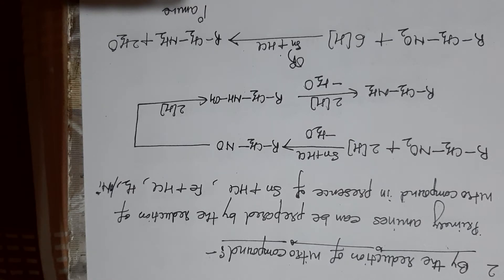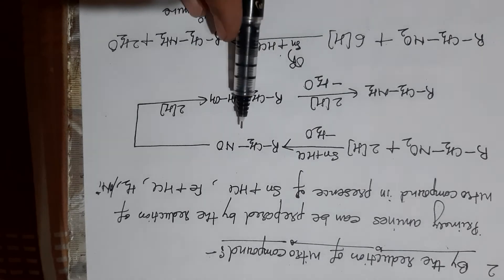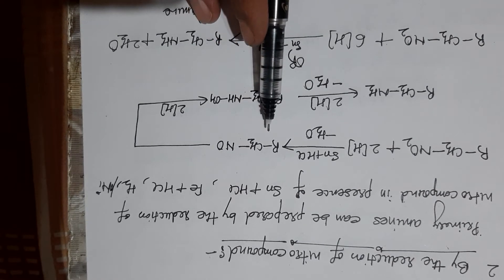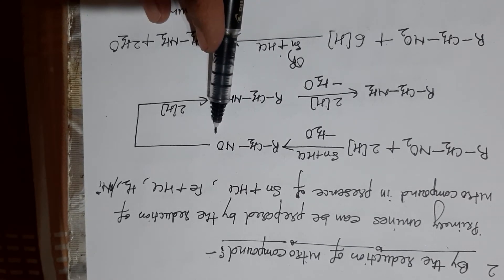By the reduction of nitroalkane or nitroarene, when we reduce any nitro compound by using Sn metal and HCl or iron metal and HCl, first of all a nitroso compound will be formed.